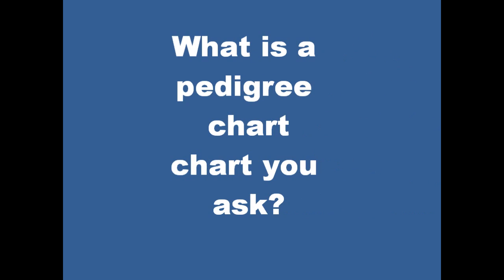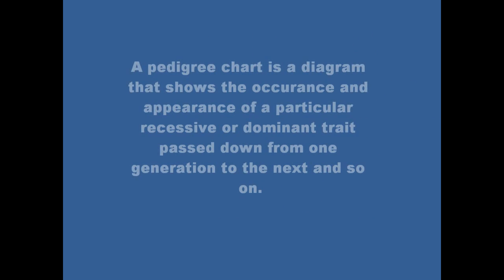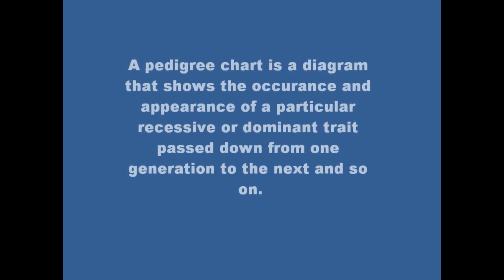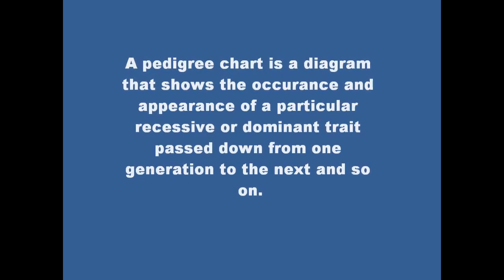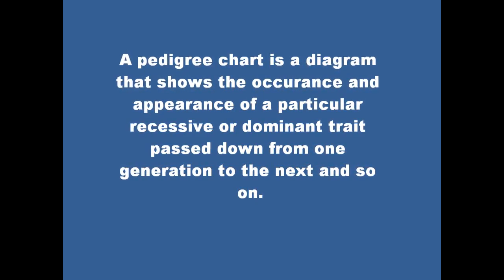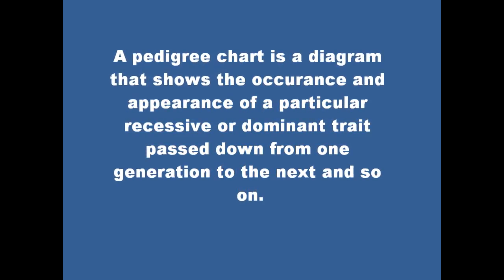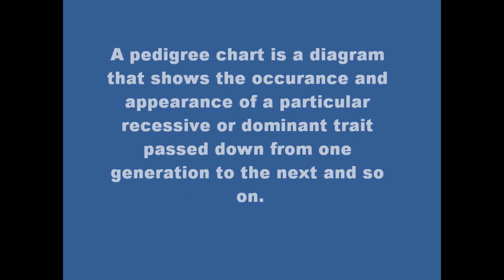How to do pedigree charts, by Christina Joseph. A pedigree chart is a diagram that shows the occurrence and appearance of a particular recessive or dominant trait passed down from one generation to the next and so on.